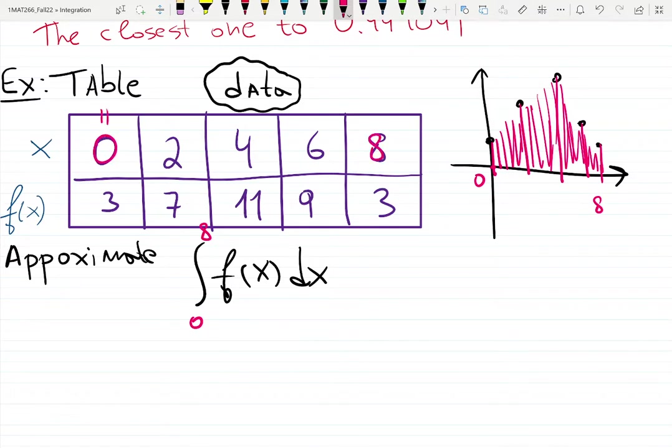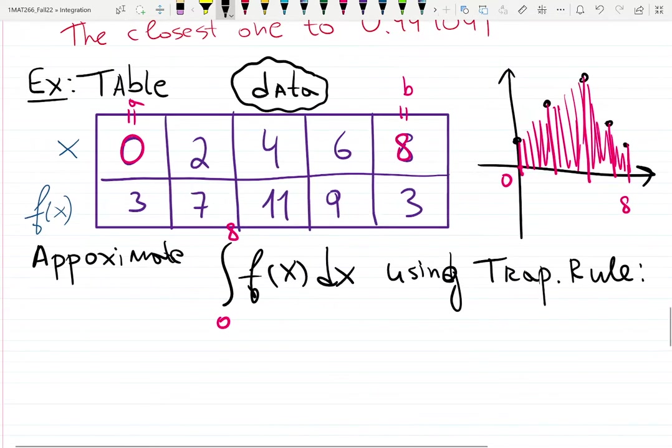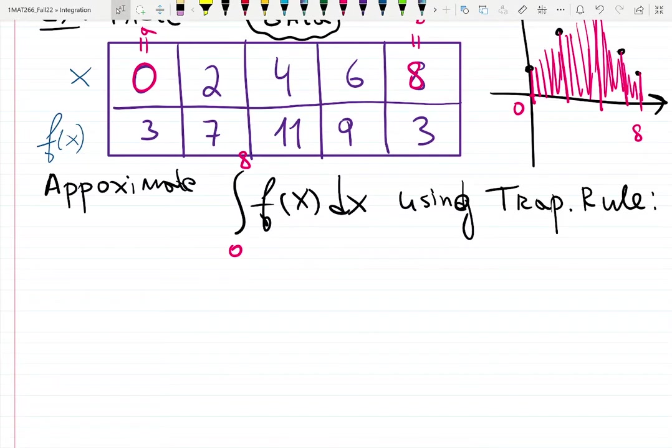We'll use the trapezoidal rule. We're looking for the area under the curve, but we don't have the curve or function. Solution: first, what is n, the number of intervals?